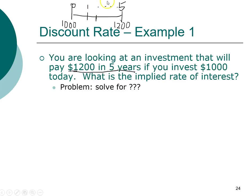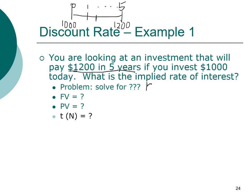We have three of the four factors, so we are solving for the discount rate. To solve for the discount rate, we need the other three pieces of information: the future value, the present value, and the investment horizon. Did you put down $1,200 for future value, $1,000 for present value, and five years for investment horizon? If so, you're almost there.